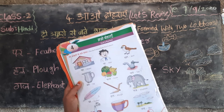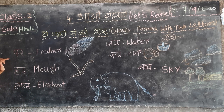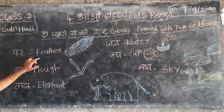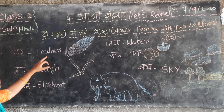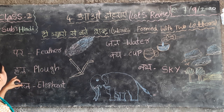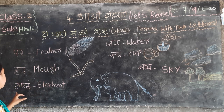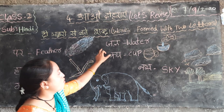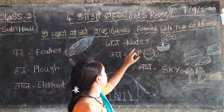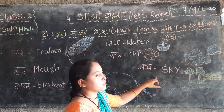And today my topic is these meanings. Perk — feather. Hull — fluff. Gaj — elephant. Gel — water. Cup — cup. Nub — sky.